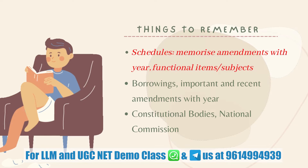First is the schedules. There are 12 schedules given in the Constitution. Try to memorize the amendments together with the year. Also, there are some functional items given under certain schedules like Schedule 11, Schedule 12, and Schedule 7. You should know the quantum of those items and what type of items has been given there.